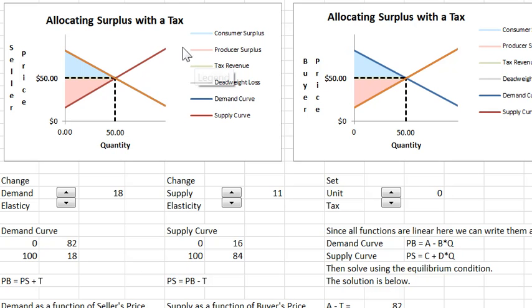Alright, now our goal is to allocate the surplus in the presence of a tax. Let's begin when there is no tax so we can understand what the diagram looks like.